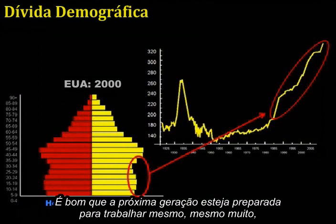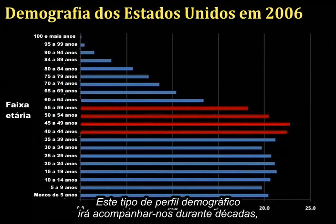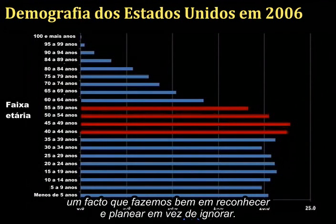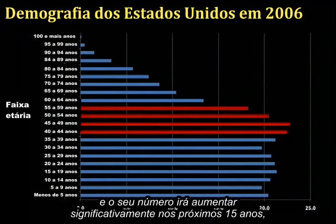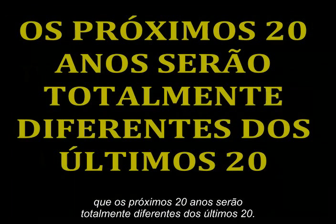The next generation better be prepared to work really, really hard — too bad they're graduating with the highest levels of college debt ever recorded. This sort of demographic profile will be with us for decades, and cannot be wished away or fixed by some clever policy. It is simply a fact of life, and one that we'd do well to recognize and plan for rather than ignore. Boomer retirement has already begun, and the pace will accelerate rapidly over the next 15 years — leading me to conclude that the next 20 years are going to be completely unlike the last 20 years.